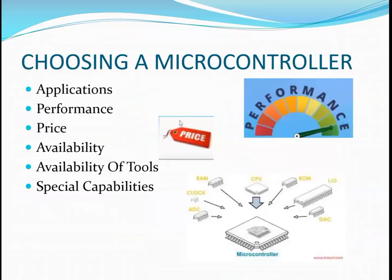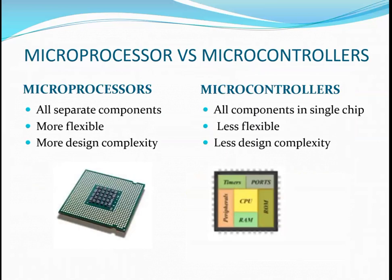To choose a good microcontroller, we consider good applications, good performance, affordable price, availability in the market, availability of tools, and special capabilities. By evaluating these six properties we can choose the best microcontroller for a reliable output. Comparing microprocessor and microcontroller: microprocessors have separate components, are more flexible, and have more design complexity, whereas microcontrollers have all components in a single chip, are less flexible, and have less design complexity.